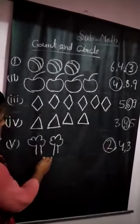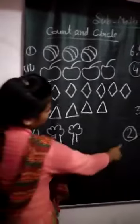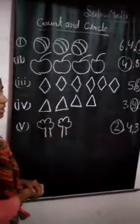One, two. How many are there? Two. So two circle. Thank you.